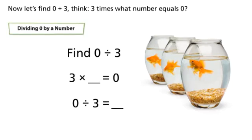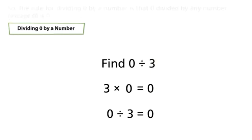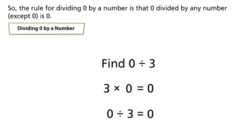3×0 equals 0. You start with zero goldfish and divide them into groups of three. There are zero groups. So the rule for dividing zero by a number is that zero divided by any number except zero is zero.